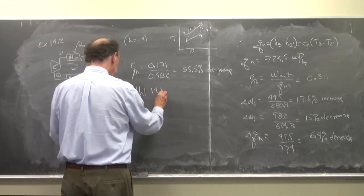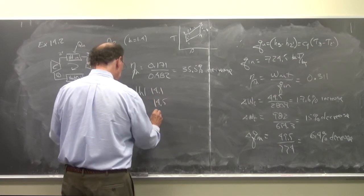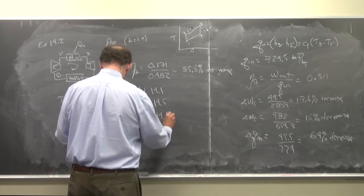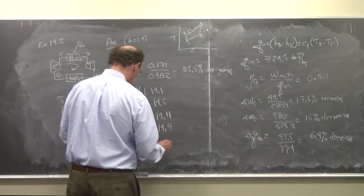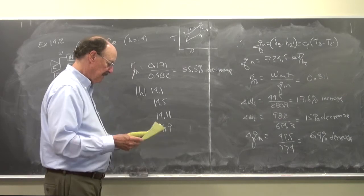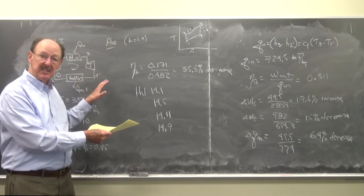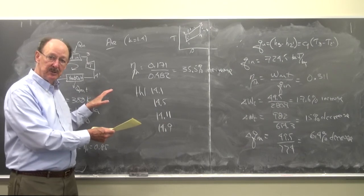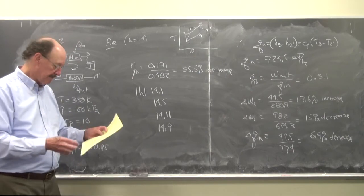For homework: 14.1, 14.5, 14.11, and 14.9, because I went back and figured that out. And now, so this was we looked at the Brayton cycle for a closed system, and now let's look at the open system gas turbine and we'll analyze that.